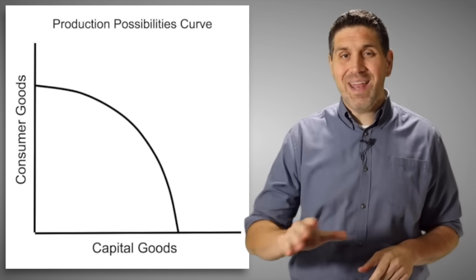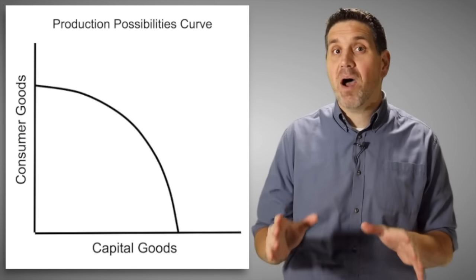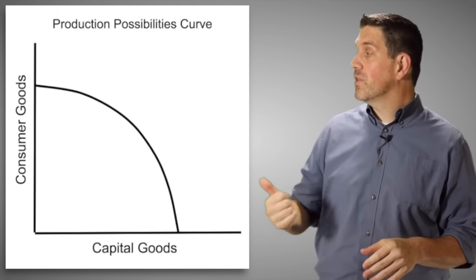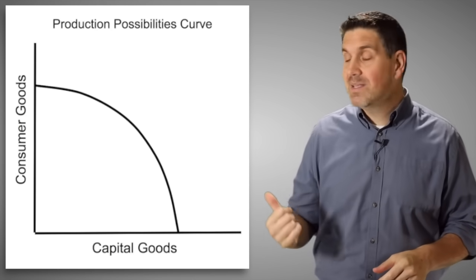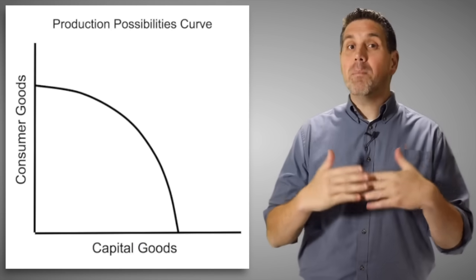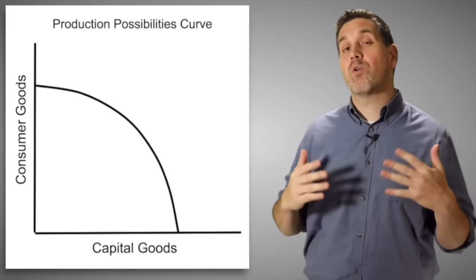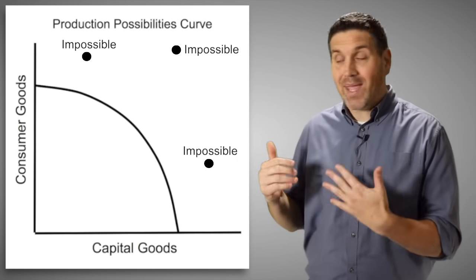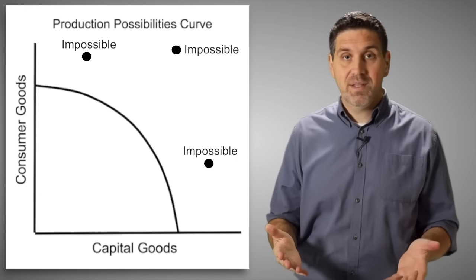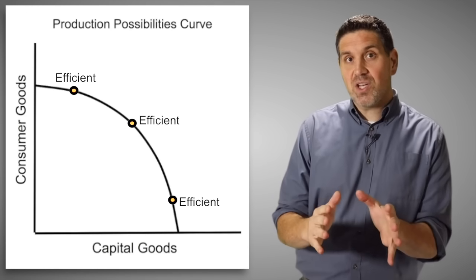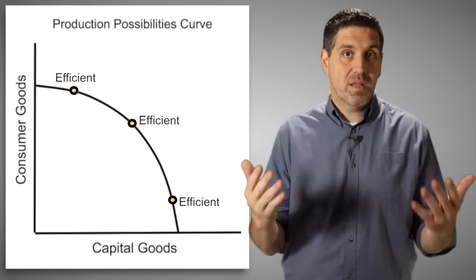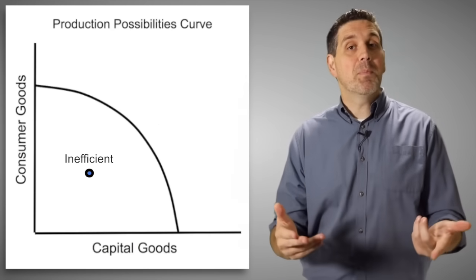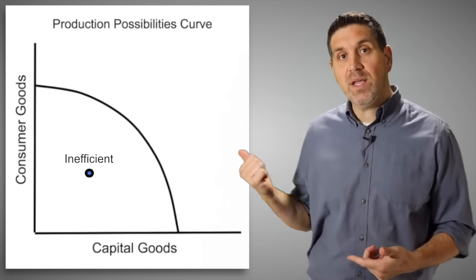The first graph that you learn in any economics class is the production possibilities curve or frontier. It's super easy. It shows you an economy that can produce either consumer goods or capital goods. This line represents the total amount of goods we can produce using all of our resources. Any point outside the curve is impossible. Any point on the curve is efficient because we're using all of our resources to the max. Any point inside the curve is inefficient.